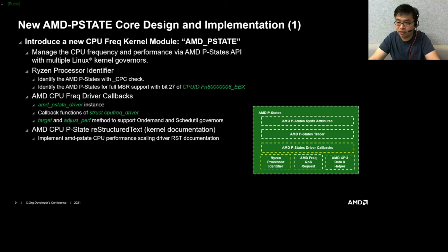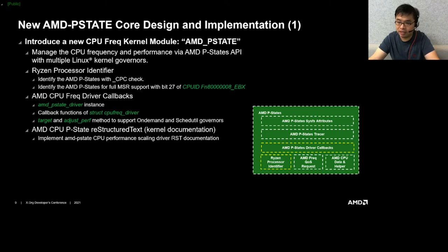We use two identifiers to determine whether the processor supports the AMD P-state module. The module registers an AMD P-state driver instance to implement general operations in callback functions, and can execute relative performance scheduling control dedicated for AMD P-state interfaces on AMD processors — such as adjust_perf, target, and fast_switch. These are used for mapping functions in governors like on-demand and schedutil, allowing the kernel governors to manage P-state performance hints via the AMD P-state module for each processor core. We will also implement AMD P-state CPU performance scheduling driver RST documentation to introduce driver details.